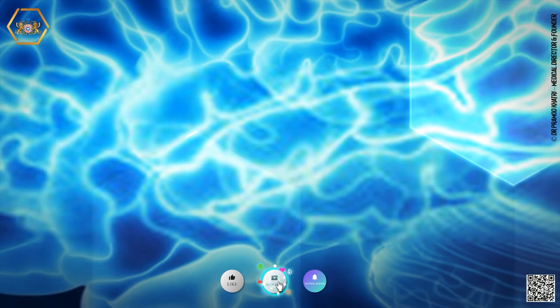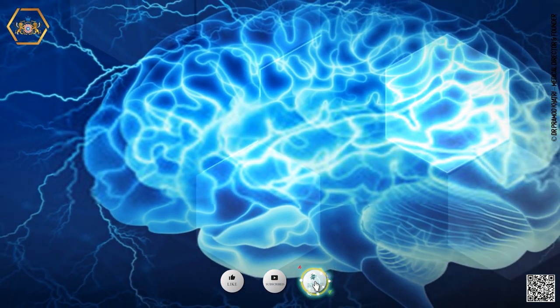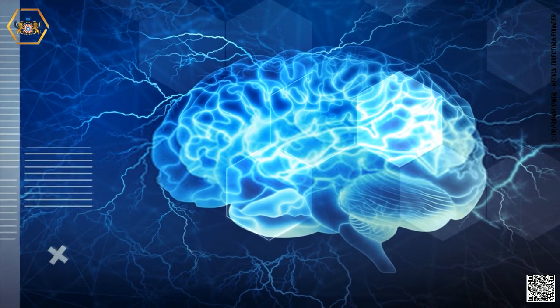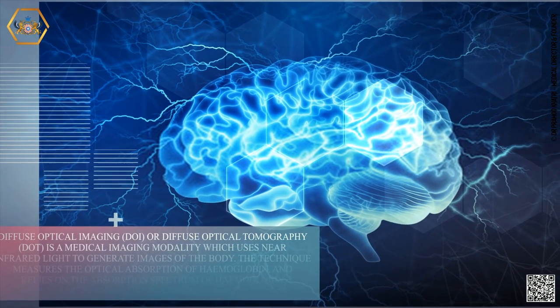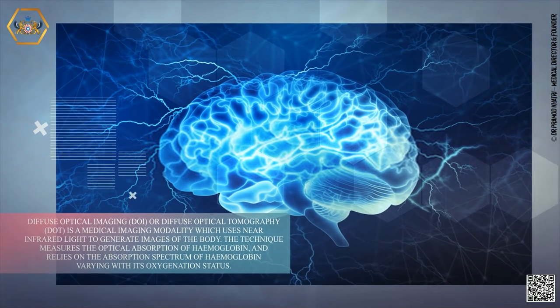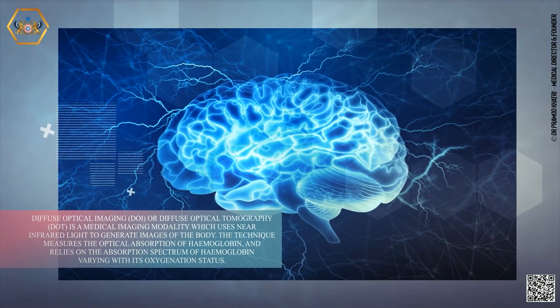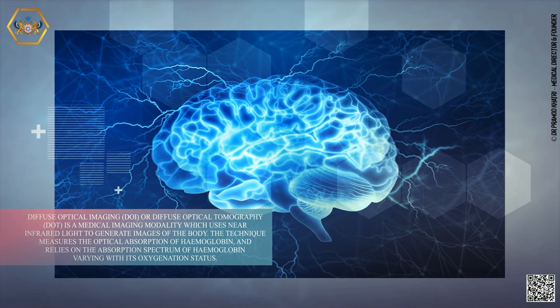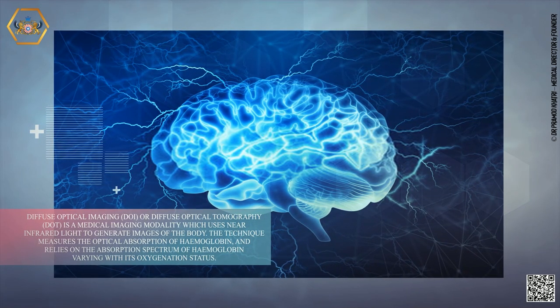Diffuse optical imaging, DOI, or diffuse optical tomography, DOT, is a medical imaging modality which uses near-infrared light to generate images of the body. The technique measures the optical absorption of hemoglobin and relies on the absorption spectrum of hemoglobin varying with its oxygenation status.